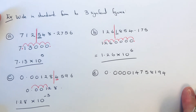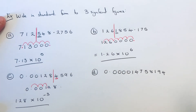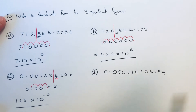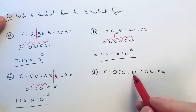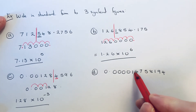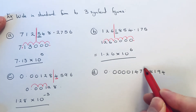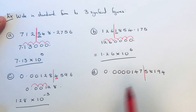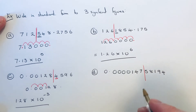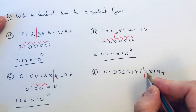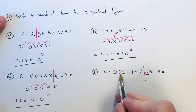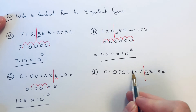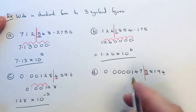Let's do part d. Again, count three significant figures: one, two, three. This time it will round up to 0.0000148.